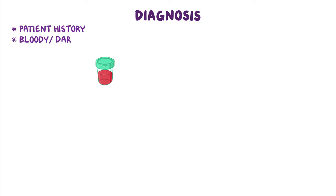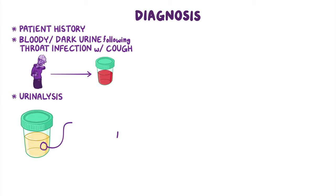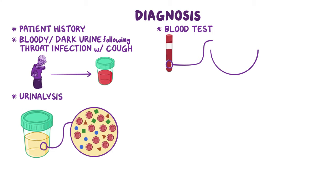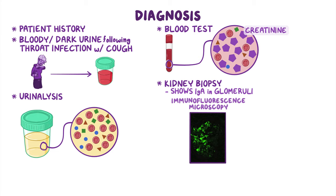Diagnosis is suspected based on patient history and the signs and symptoms of kidney disease, like bloody or dark urine following a throat infection with cough, and puffiness of the face and legs. Clinical tests like urinalysis can check the urine for elevated levels of red blood cells and protein. Blood tests can detect increased levels of waste products like creatinine and decreased levels of red blood cells and protein. At present, the definitive diagnosis requires a kidney biopsy that shows IgA in the glomeruli, seen with the help of immunofluorescence microscopy. Material consistent with immune complexes in these areas may also be seen on electron microscopy.